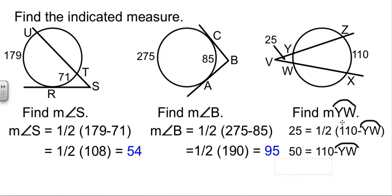This time, instead of distributing the half, I just went ahead and multiplied by two to get it out of my way. 110 minus something gives me 50. That something must be 60. Played a little bit of different algebra there, but that's okay.